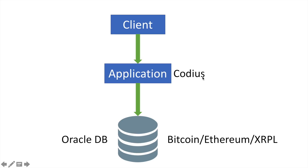Codeus allows users to host application code and ensures that this code cannot be changed once it is published. But it still requires some database to store data — this database could be the Bitcoin blockchain, Ethereum blockchain, or the XRP consensus ledger. Codeus allows you to host any application. As a developer, you only need to create a document, a container, and deploy it to a Codeus host. In the next video, I will show you how to do that.